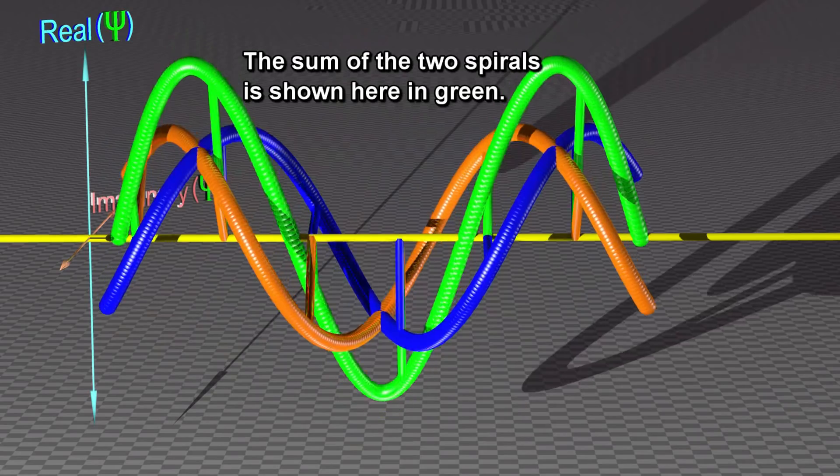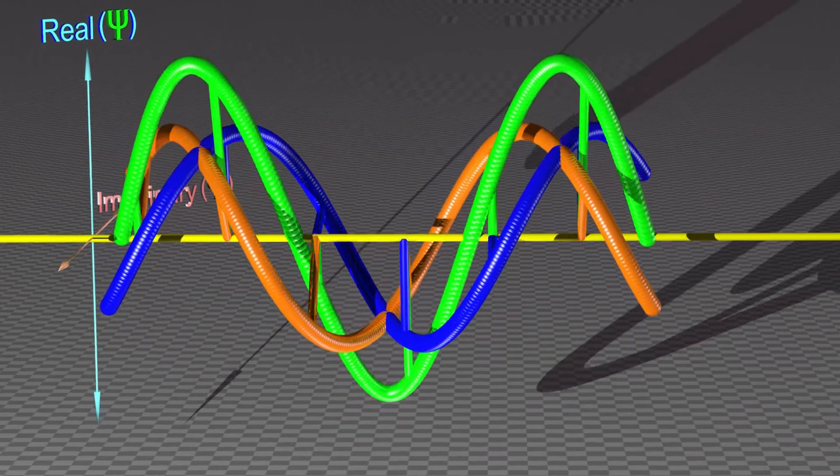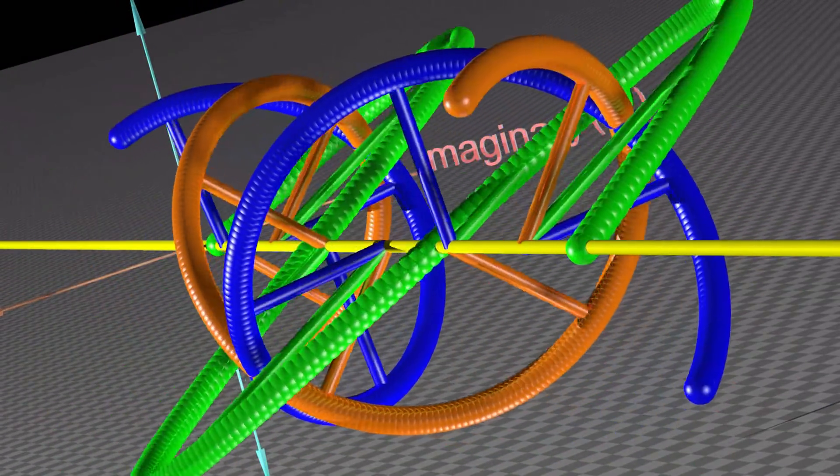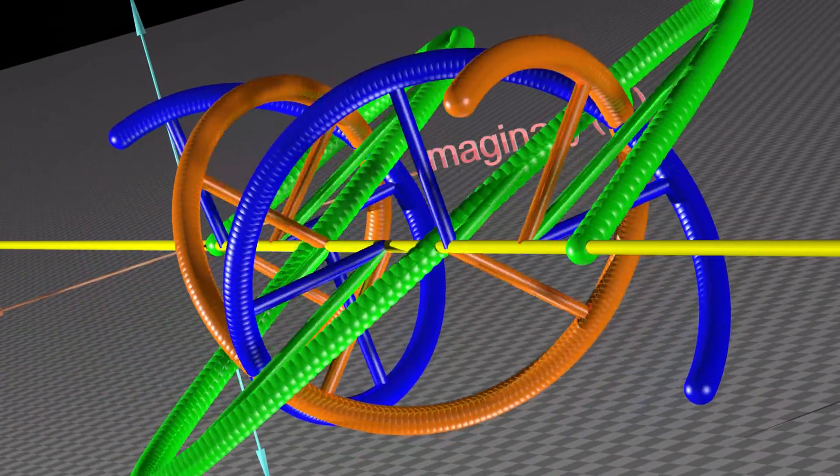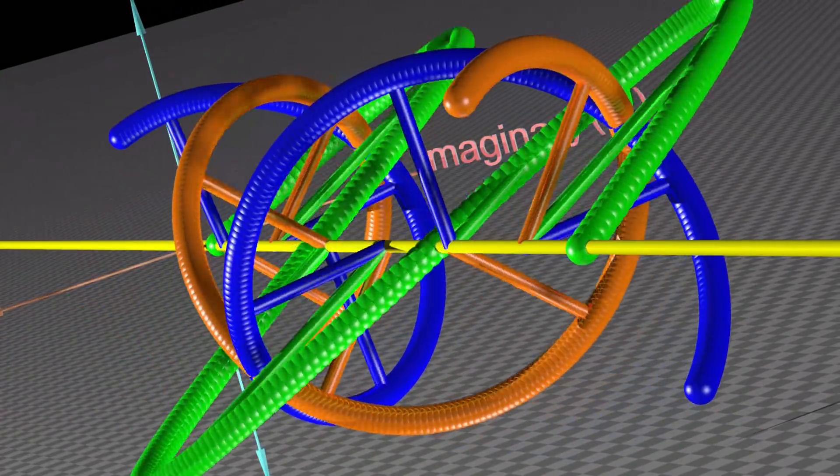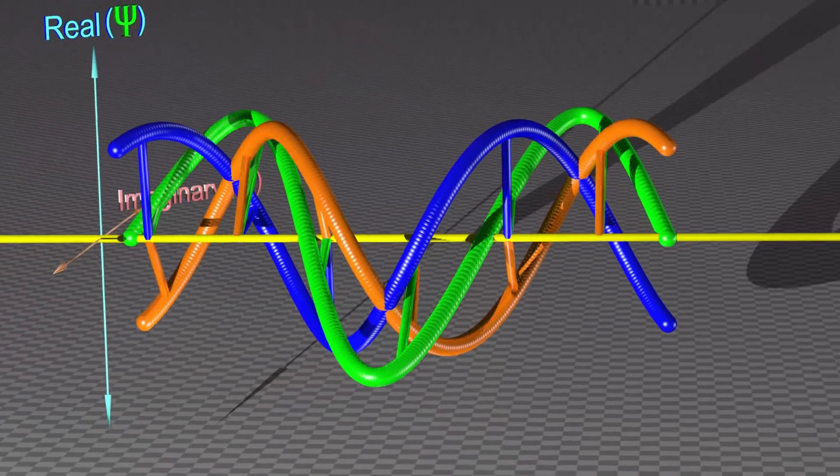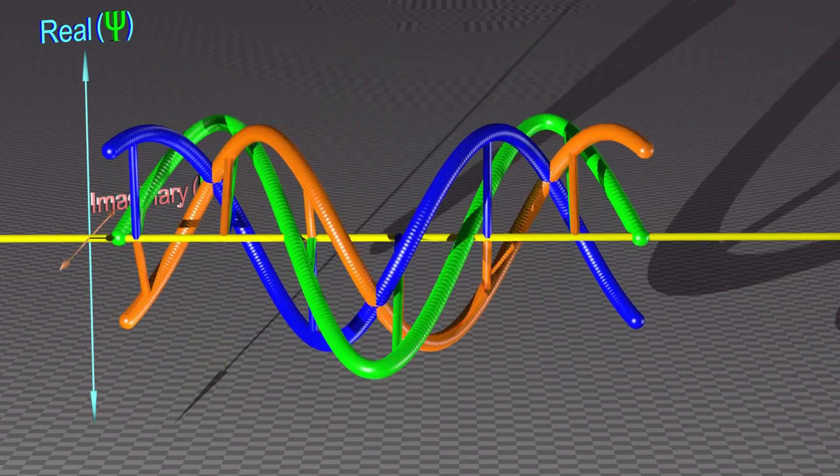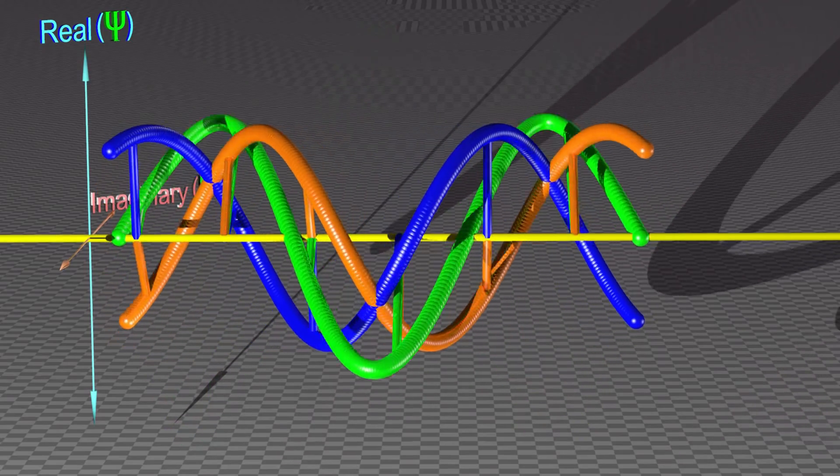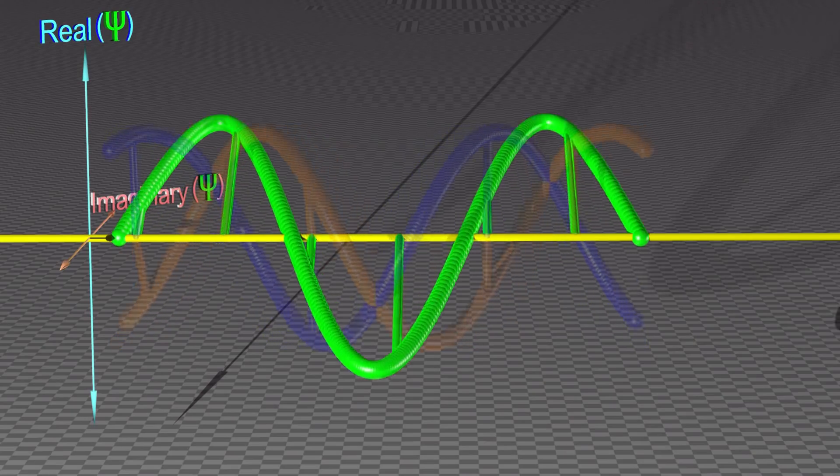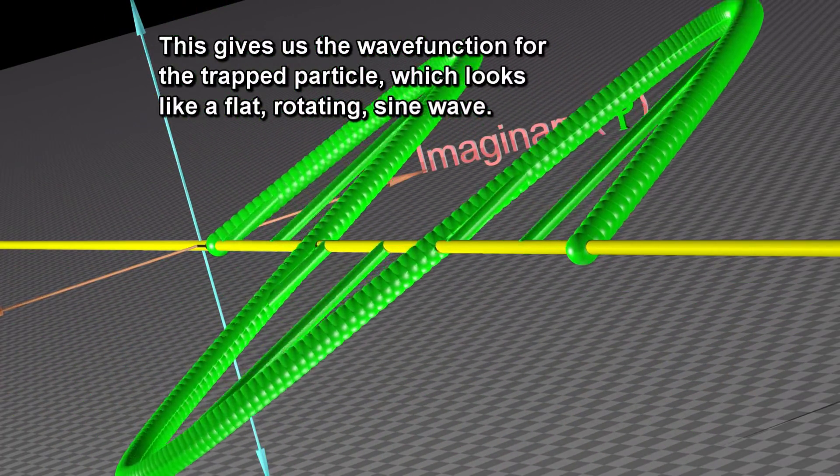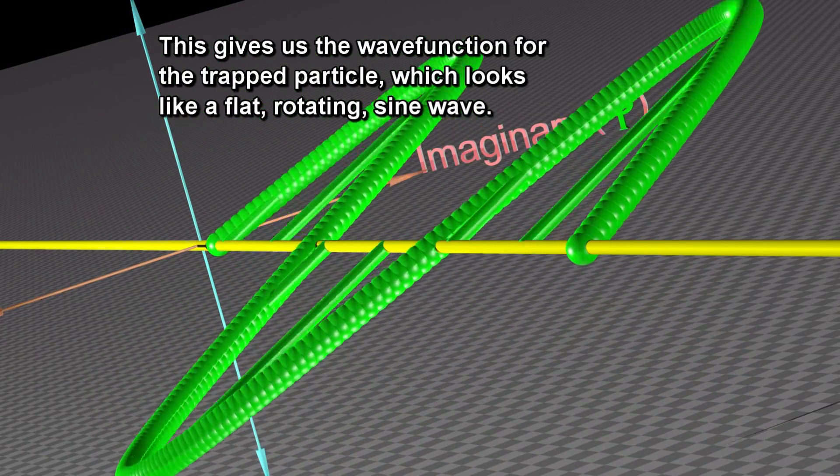The sum of the two spirals is shown here in green. This gives us the wave function for the trapped particle, which looks like a flat, rotating sine wave.